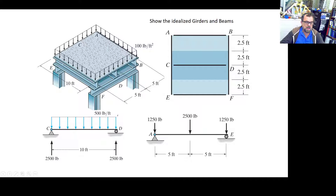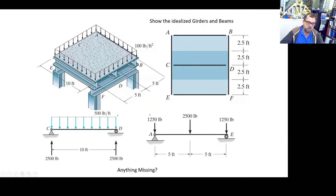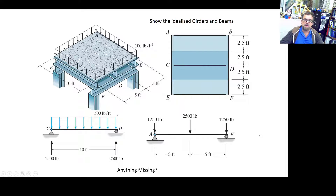For girder AE, this load corresponds to that reaction. The load from both sides gives the reactions at each end. But don't forget: on top of the tributary load, the joist itself has an added self-weight — maybe 50 or 20 pounds per foot. The girder is also supporting its own self-weight. Keep that in mind every single time.